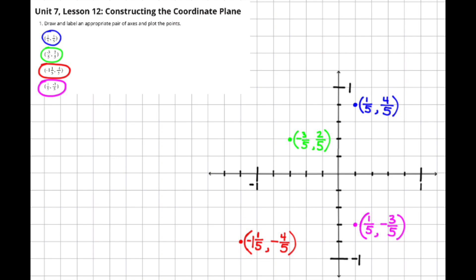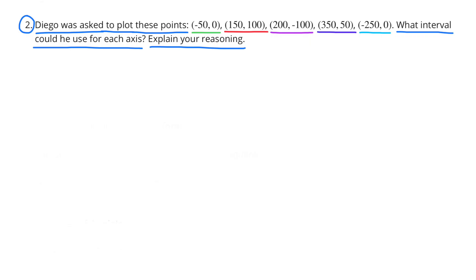For the fourth and last set of coordinates, I moved to the right one-fifth and then I moved down three-fifths, and that's where I plotted my point for the last set of coordinates.